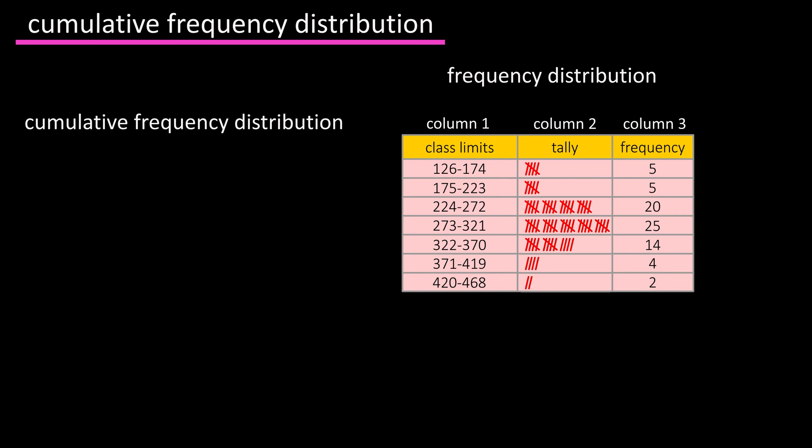A cumulative frequency distribution shows the number of data values less than or equal to the upper class limit of a given class.